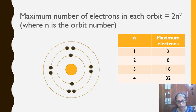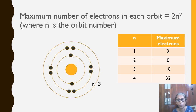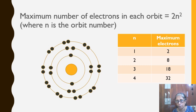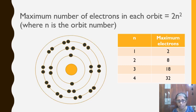Now for the third shell, N=3. 3²=9, and 2N²=18. So 18 electrons can be accommodated in the third shell. For the fourth shell, N=4, and 2N²=32.